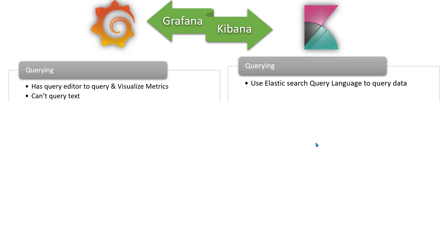In Grafana you can connect to many data sources, and all of these data sources have their own query editor, since the syntax for querying MySQL differs from PostgreSQL and from InfluxDB's query language. Grafana provides a query tool that is customized for whichever data source you select. The one thing not available in Grafana is text querying — for example, you cannot analyze how many times a certain word appears in a log file.